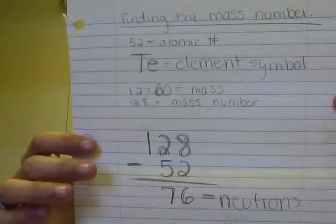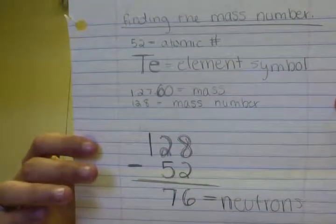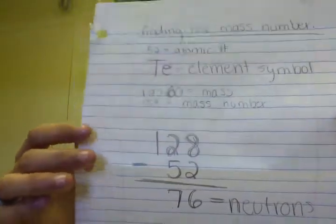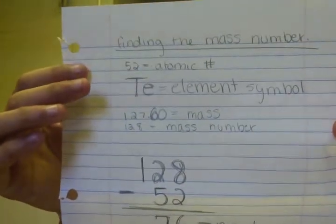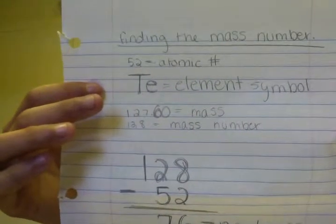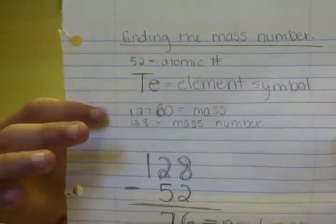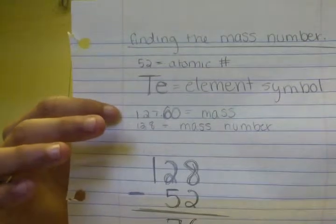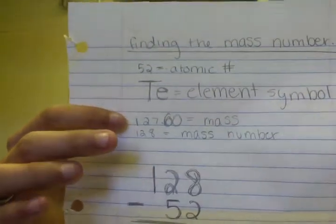To find how many neutrons are in your element, you must start off with the basics. First, the atomic number, which in this case is 52. The element symbol, which is TE, and the regular mass is just 127.6.